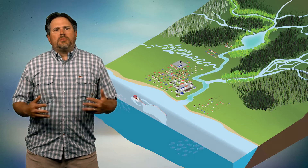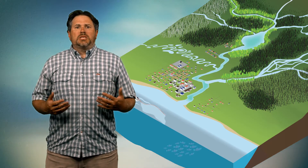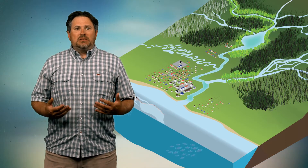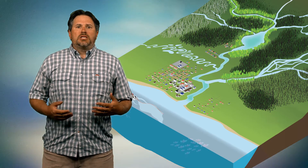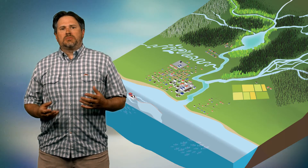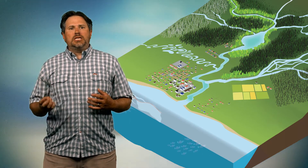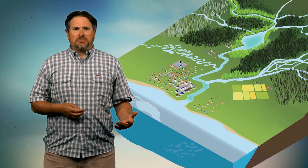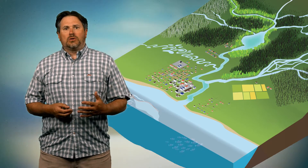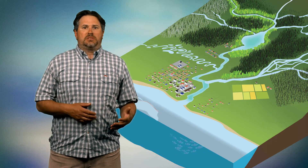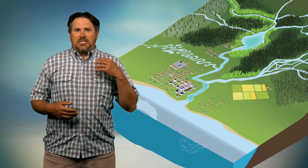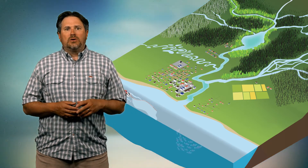Coupled with urbanization and road building, there's also a need to eat — we need to grow food. So often forest ecosystems are turned into agricultural ecosystems, and where crops are grown, forests are cut down to make space. And that has consequences for a whole host of things.